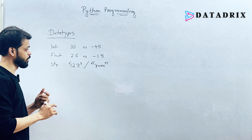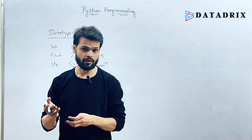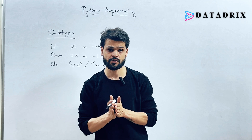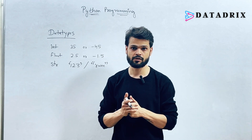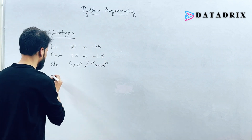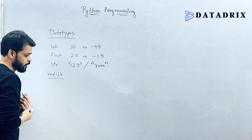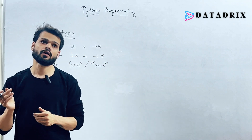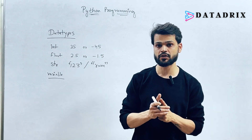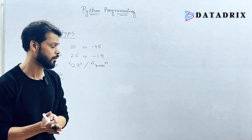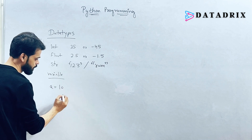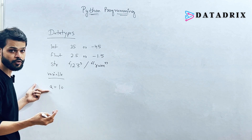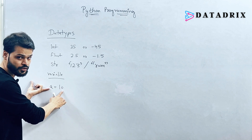In the next sessions we will understand lists, dictionaries, tuples, sets, and frozen sets in depth. Now, after data types, we will understand variables. What exactly is a variable? A variable is something which can store a value. For example, if a equals 10, then 10 is a value stored in a, so a becomes my variable.